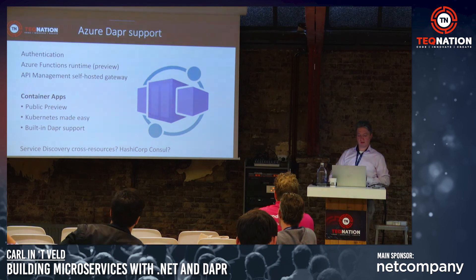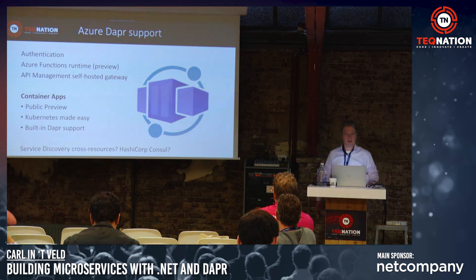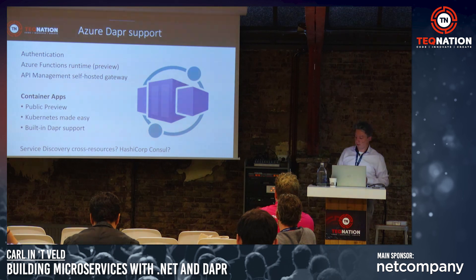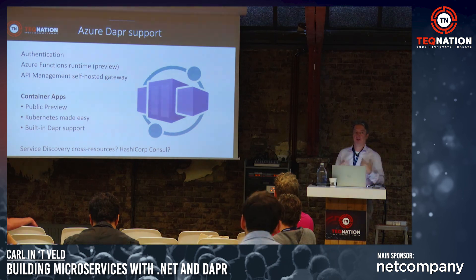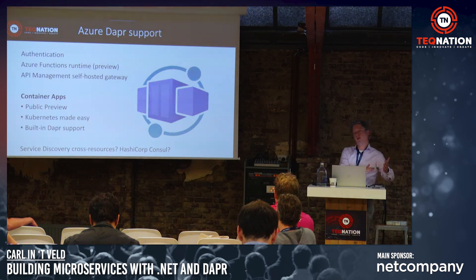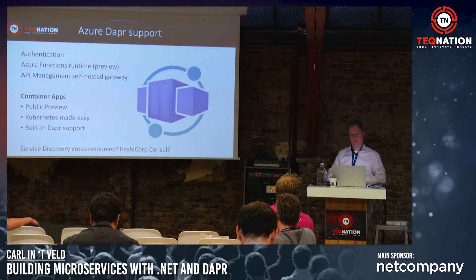Azure Dapr support: take a look at Azure Container Apps, currently in public preview. It's Kubernetes made easy — very promising. It comes with built-in Dapr support. For services across clusters: I have read about HashiCorp Consul, but I don't have experience with it. If you have on-premises resources and cloud resources and need service discovery across infrastructures, Dapr is currently not providing anything out of the box — Dapr is limited to your Kubernetes cluster. Currently no plans in the Dapr team to build that out, but at least they refer to taking a look at Consul.